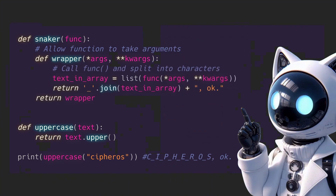The difference here is that the wrapper will take arguments because this uppercase function is getting arguments. Therefore these are the default arguments — do not change these, they are specific keywords — and what we do is list what this function returns.